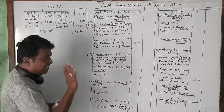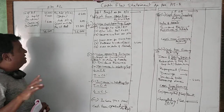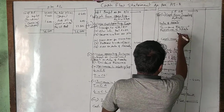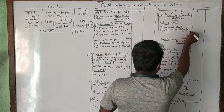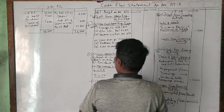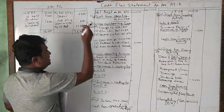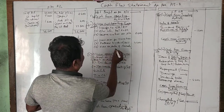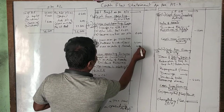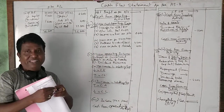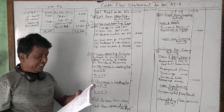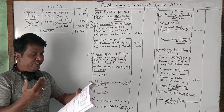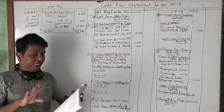Now let us take these numbers into the cash flow statement — what numbers go where. We purchased machinery for cash of 1,600, so purchase of plant and machinery 1,600 is mentioned as a minus. Depreciation on plant and machinery is 2,400 and loss on sale of machinery is 400 — all these numbers are now figured. The machinery adjustments are complete.